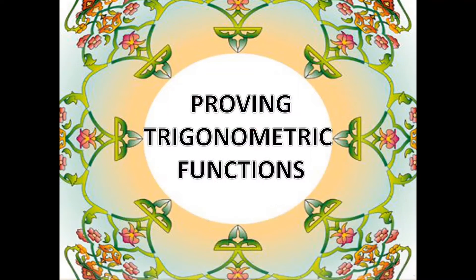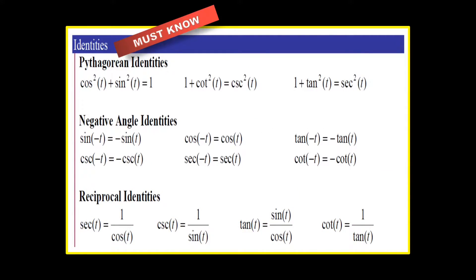Before we start, make sure that every time you try to prove a trigonometric function, you have to know these identities. You have to memorize the trigonometric identities, the negative angle identities, and the reciprocal identities. All these are very, very important before you can start proving trigonometric functions.